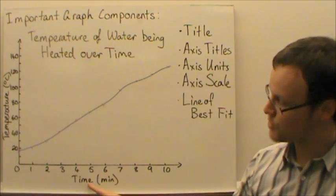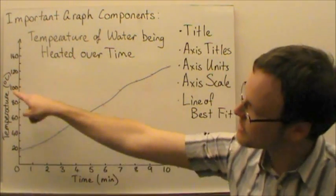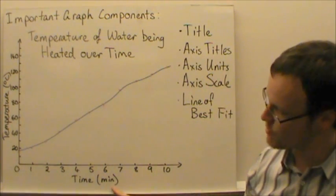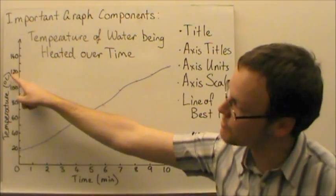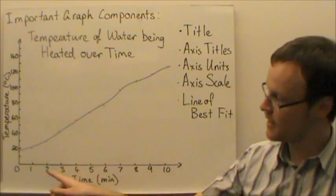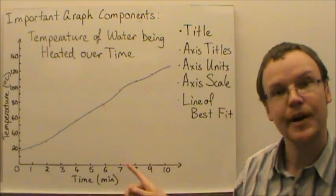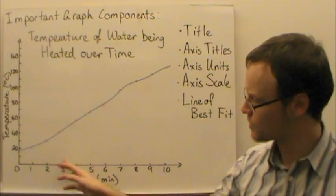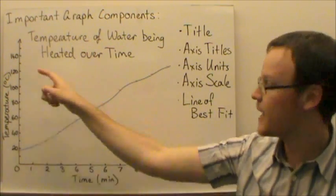Axis titles, so time on this axis and temperature on this axis. The axis units, so the units here are minutes, the units here are degrees Celsius for temperature. The axis scale as well, it shows how the units progress along the x axis and along the y axis.